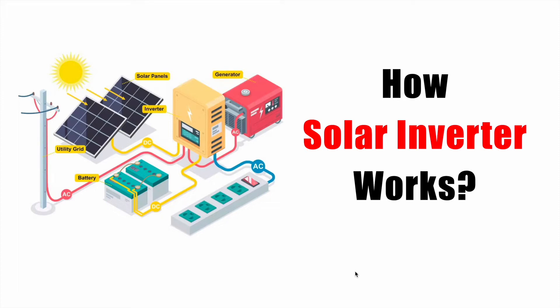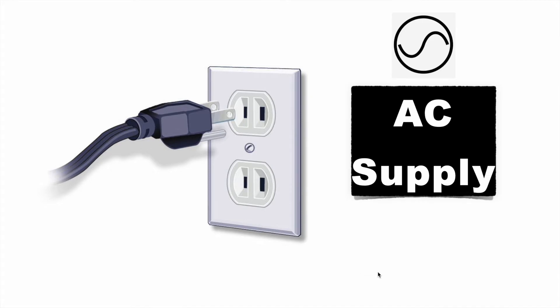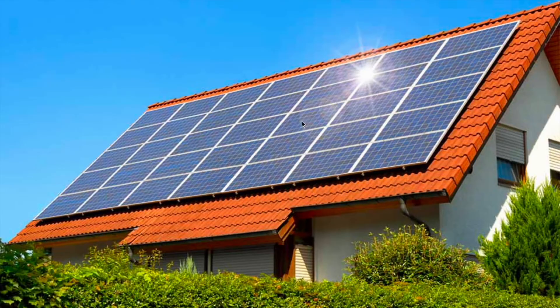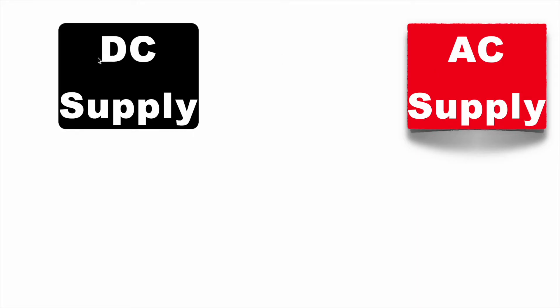How solar inverter works. As per our household needs, we require AC power supply as input which is used in fans, lights, etc. And we know that our solar panel gives DC power supply. So this DC power supply must be converted into AC supply.